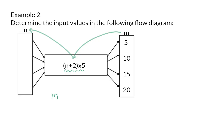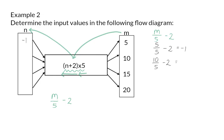So we have to start with m, our output value, and divide by 5 and then subtract 2. The first output value is 5, which I am going to divide by 5 to get 1, and then subtract 2 to get my input value of minus 1. When I substitute 10 and divide that by 5 I will get 2, and then 2 minus 2 will give me an input value of 0.